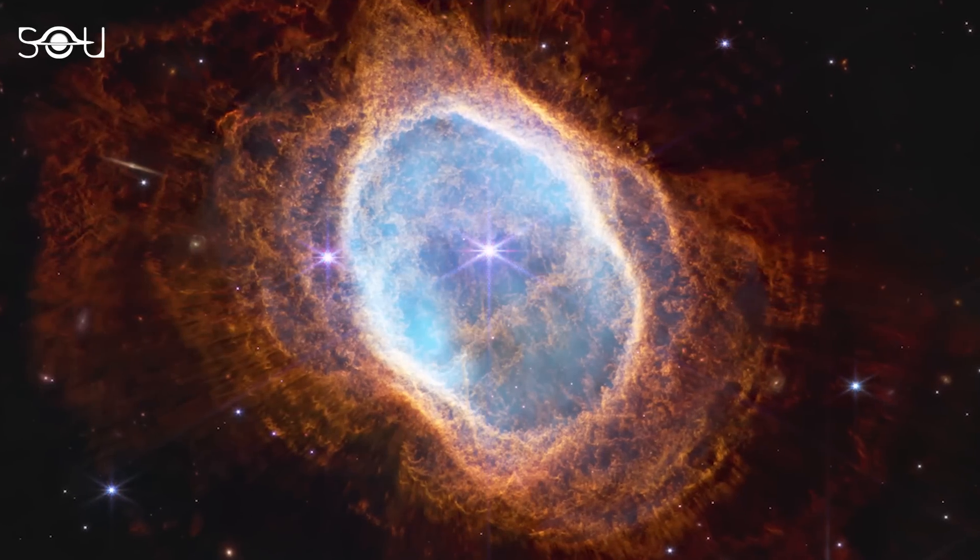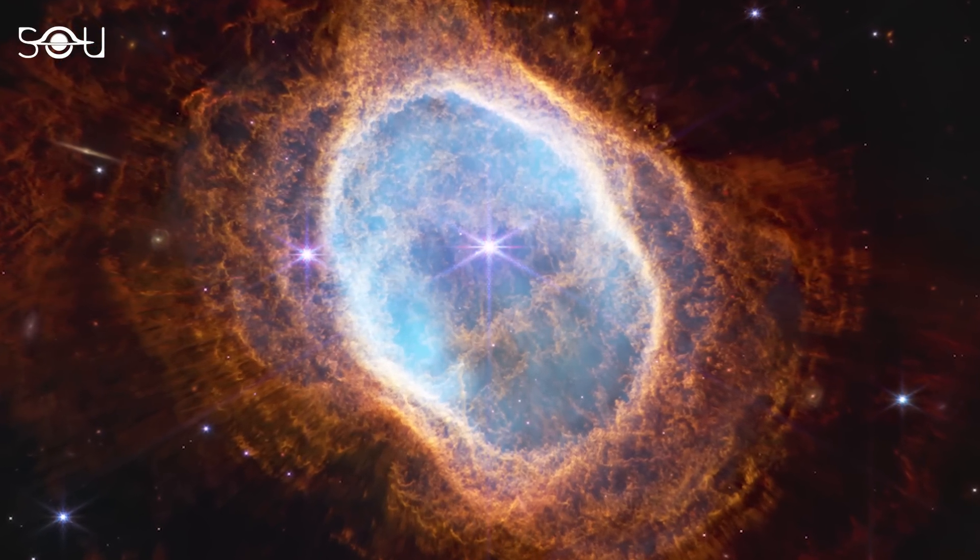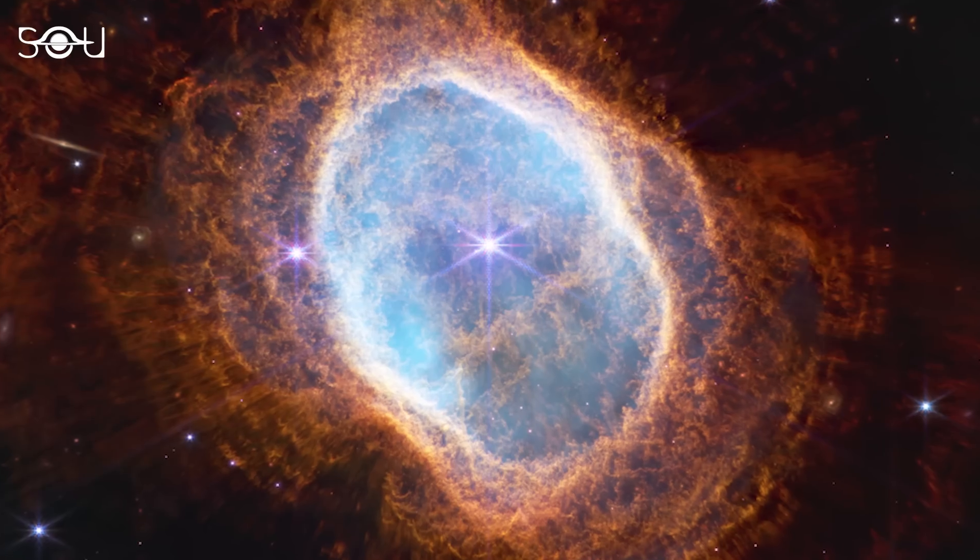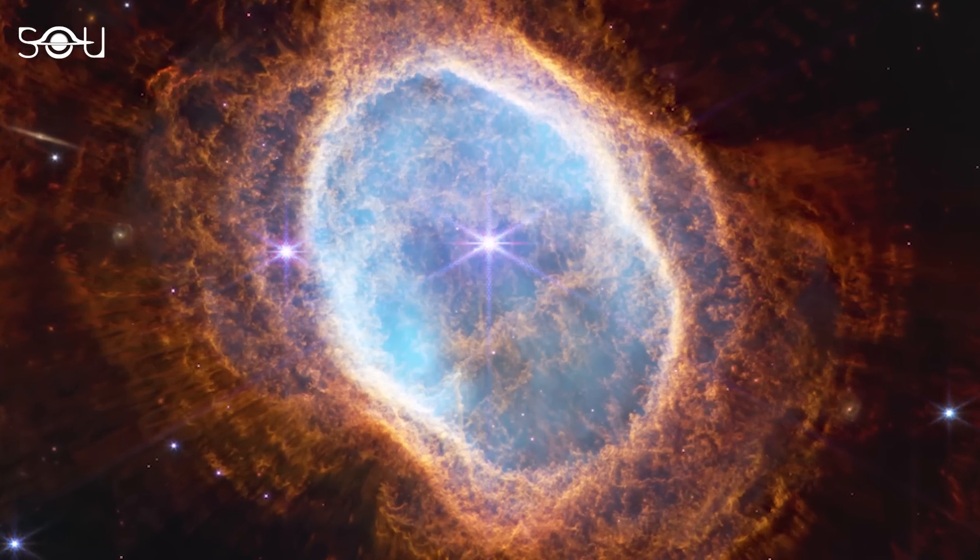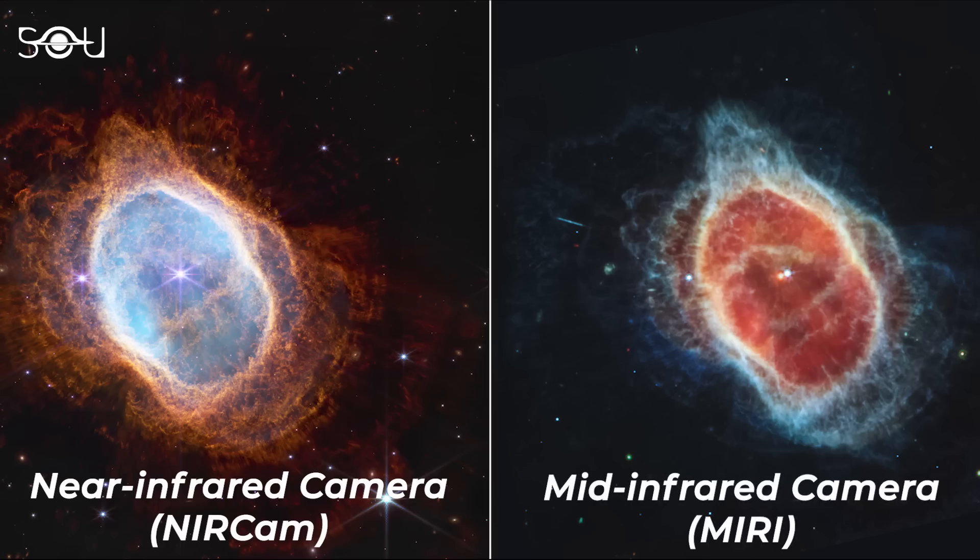The next Webb image is of a planetary nebula, a dying star about 2,500 light-years away, known as the Southern Ring Nebula. NASA released two images of this nebula, one captured by the near-infrared camera, or NIRCAM, and the other by the mid-infrared camera, or MIRI.